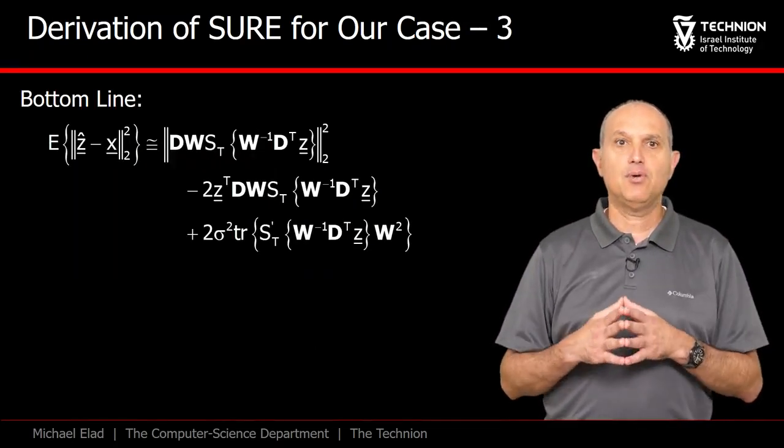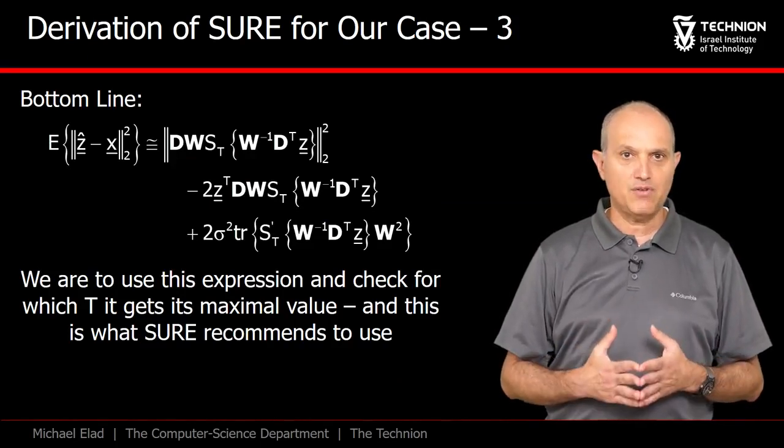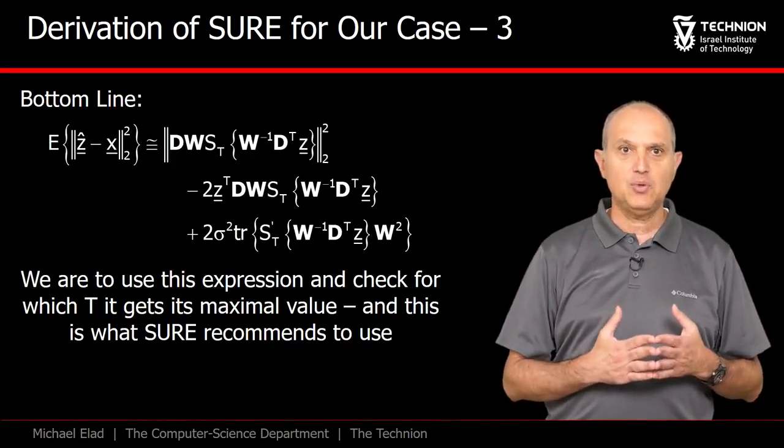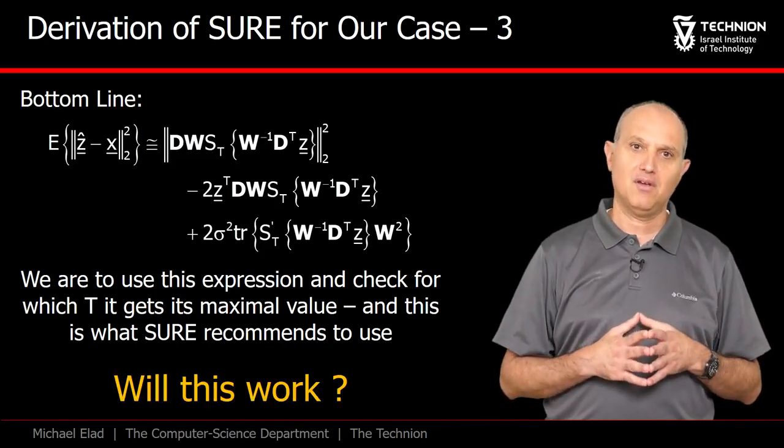And this is the bottom line. All we need to do is to evaluate this expression for varying values of T, and choose the one that gives the smallest estimated value. What do you think? Will it work?